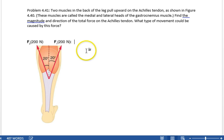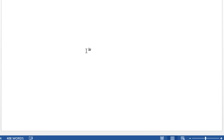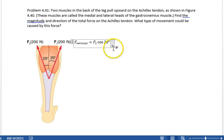All right, so how do we formalize this? F vertical equals F1 times cosine of 20 degrees, plus F2 times the cosine of 20 degrees.